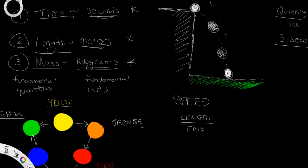Therefore, in order to come up with the units that are used when calculating speed, we use the unit for length, meters, divided by the unit for time, seconds.